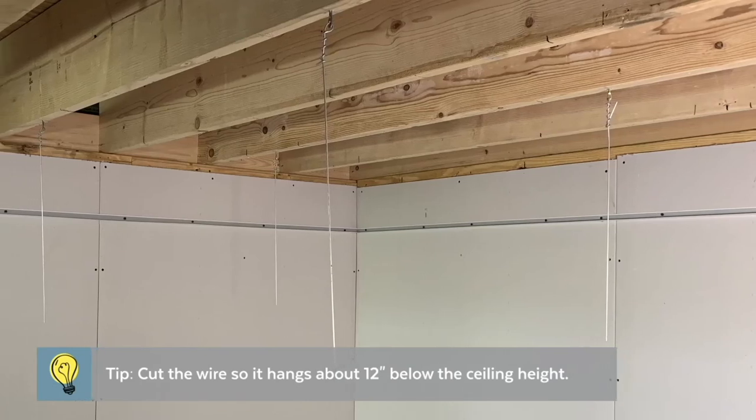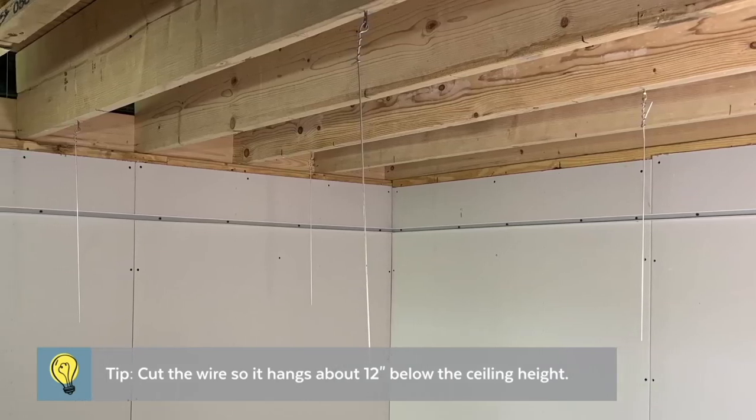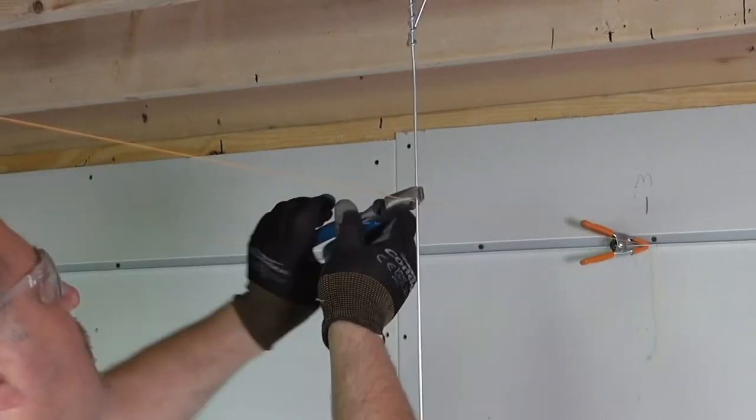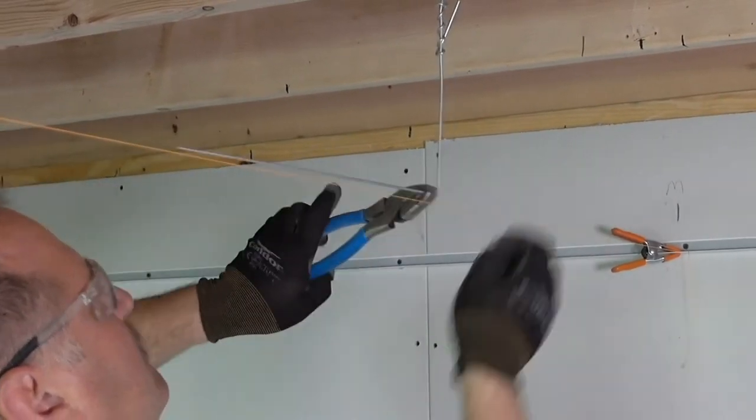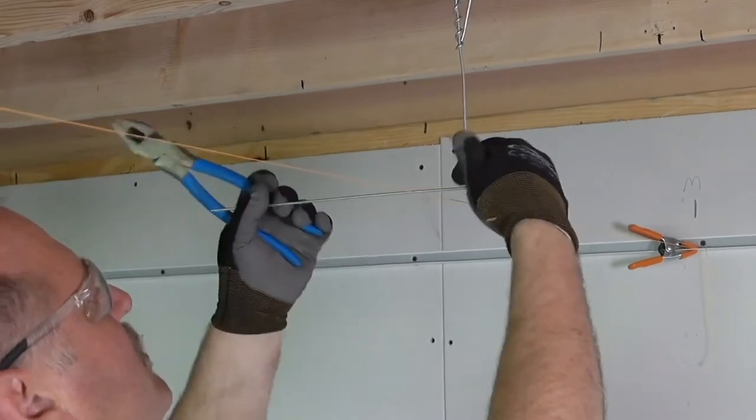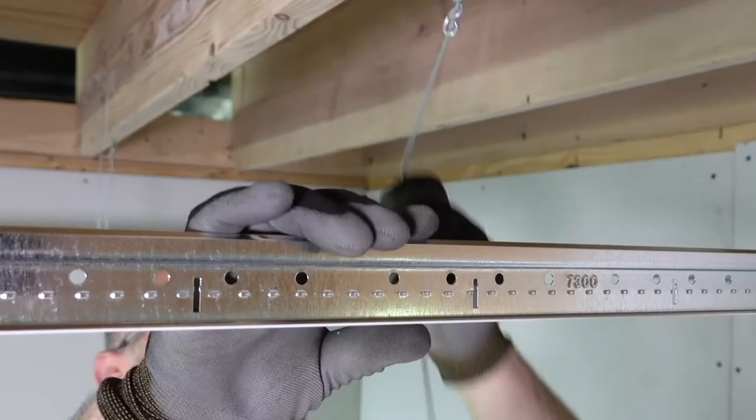Prepare all of the hanger wires in this manner. Once all wires are attached, bend them into an L-shape 3 quarters of an inch above the intended height of the ceiling.